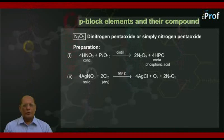First, 4HNO3 concentrated plus P4O10, which is otherwise known as phosphorus pentoxide. The two are distilled to give the products 2N2O5 plus 4HPO3. HPO3 is known as metaphosphoric acid.